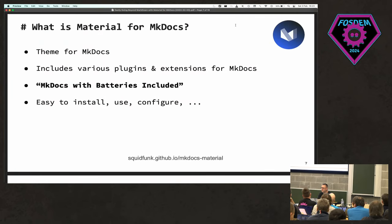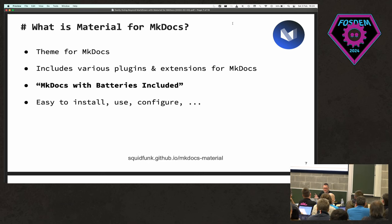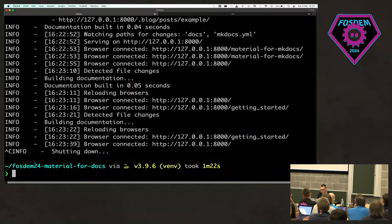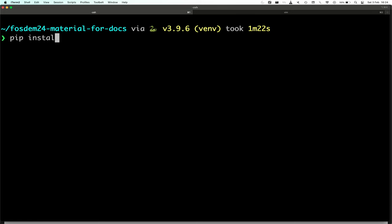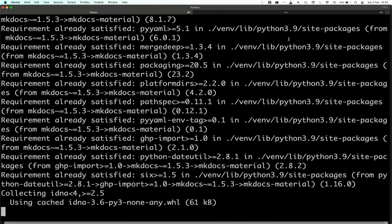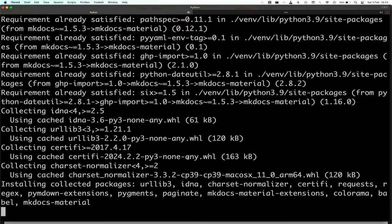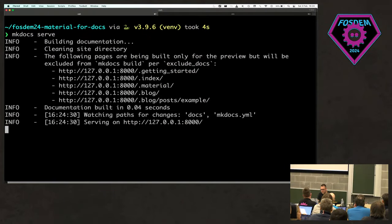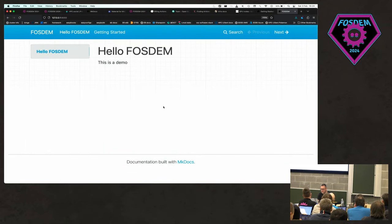Material for MkDocs is a theme for MkDocs that makes things a whole lot better and nicer to look at straight out of the box. It comes with a whole bunch of plugins and extensions — extra features that MkDocs cannot do by default. I see this as MkDocs with batteries included — this is actually how MkDocs should be out of the box. To install it, in your Python virtual environment you run pip install mkdocs-material.